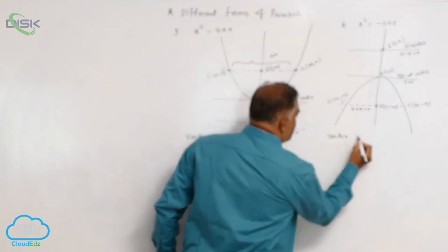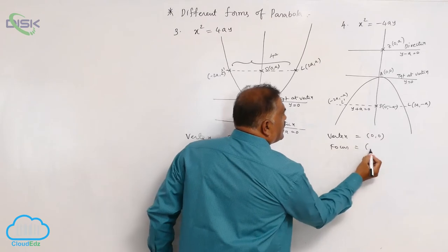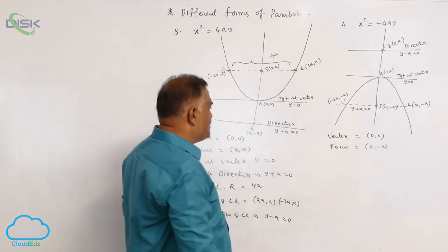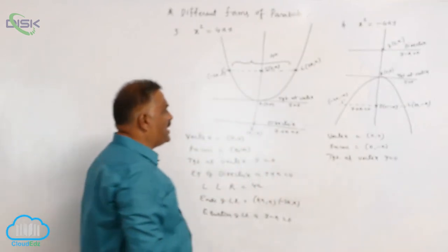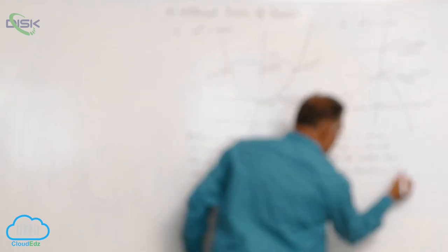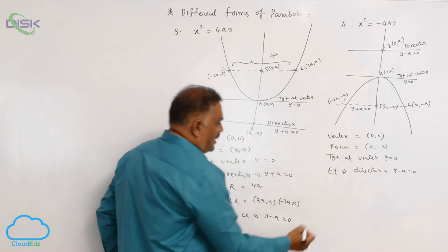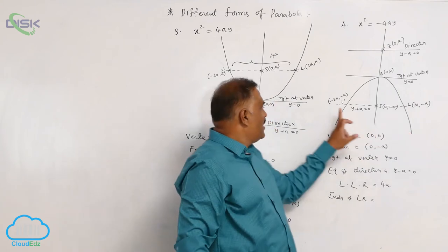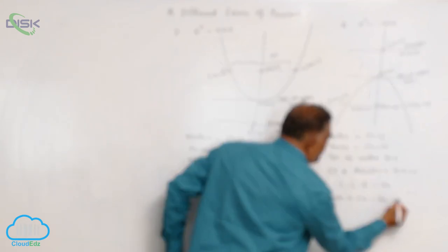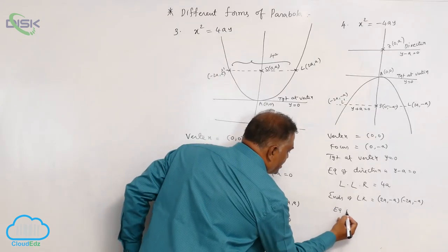Listing all properties of x² = -4ay: vertex = (0, 0), focus = (0, -a), tangent at vertex is y = 0, directrix equation is y - a = 0, length of latus rectum is 4a, ends of latus rectum are (2a, -a) and (-2a, -a), and the equation of the latus rectum is y + a = 0.